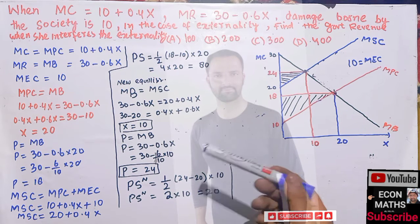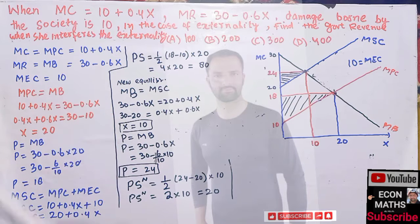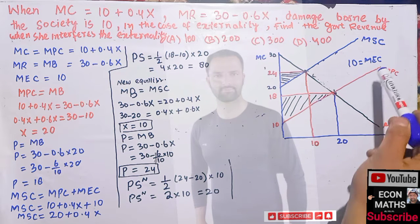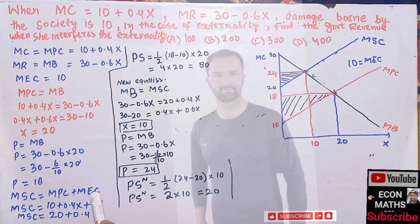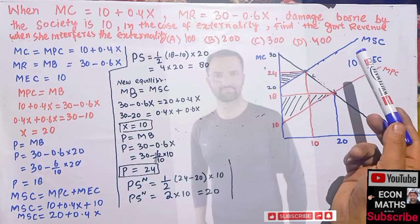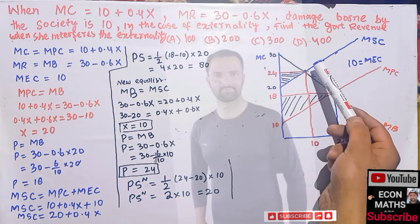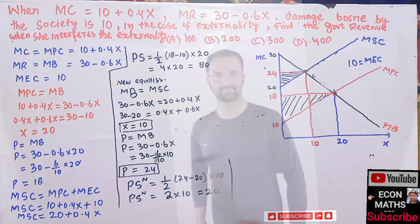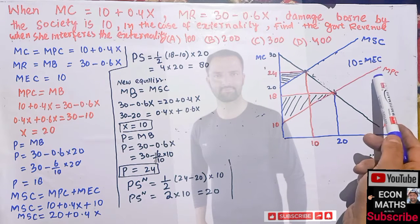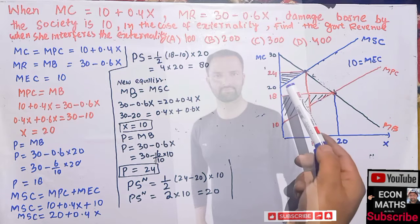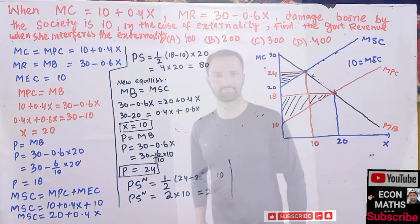After that, when we take into consideration the marginal external cost, this line will be our marginal social cost — which is the aggregate of marginal private cost plus the marginal external cost, which is constant at 10. That means the marginal private cost curve will shift 10 units vertically upward, and we achieve the marginal social cost curve when we account for the marginal external cost.